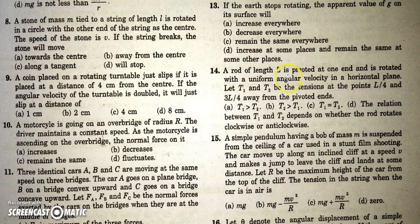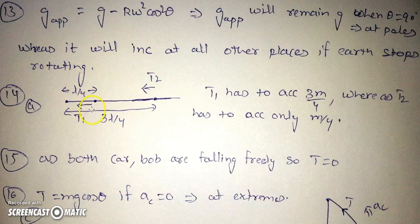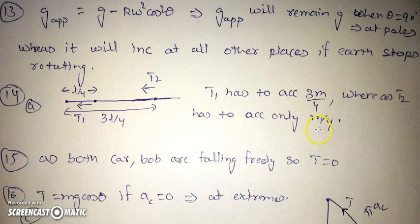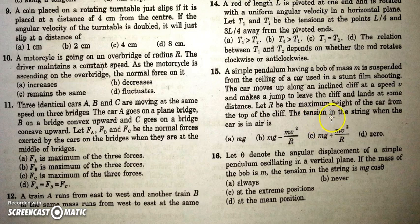There is a rod of length l pivoted at one end, rotating with uniform angular velocity. T1 is the tension at distance l/4 from the pivot and T2 is the tension at distance 3l/4. T1 must accelerate three-quarters of the rod's mass, while T2 only has to accelerate one-quarter of the mass. Therefore T1 is greater than T2.